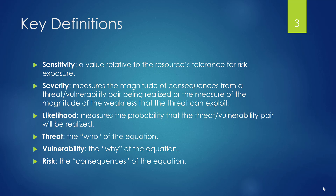Severity is the magnitude or impact associated with a very specific threat and vulnerability pair. It's key when writing risk statements — we're looking at one threat and one vulnerability paired together to come up with severity. That may mean the same resource has lots of different threat-vulnerability pairs being analyzed against it. Likelihood is simply the probability that the threat and vulnerability will occur together. The threat is the who — who is the threat actor. The vulnerability is the weakness — why are they doing it, what weakness are they trying to exploit. And the risk is the actual consequences.